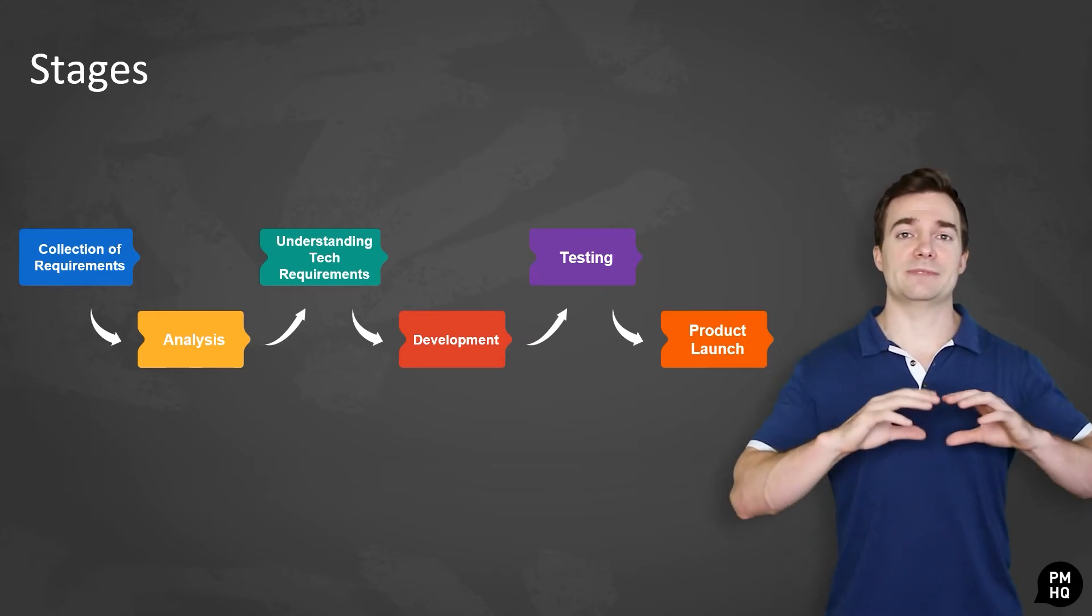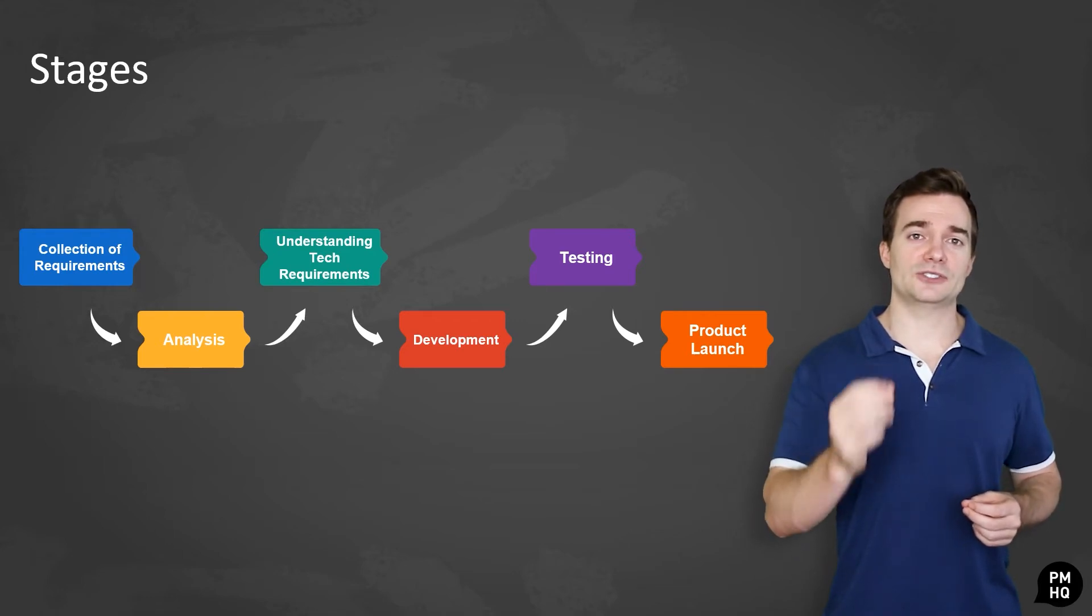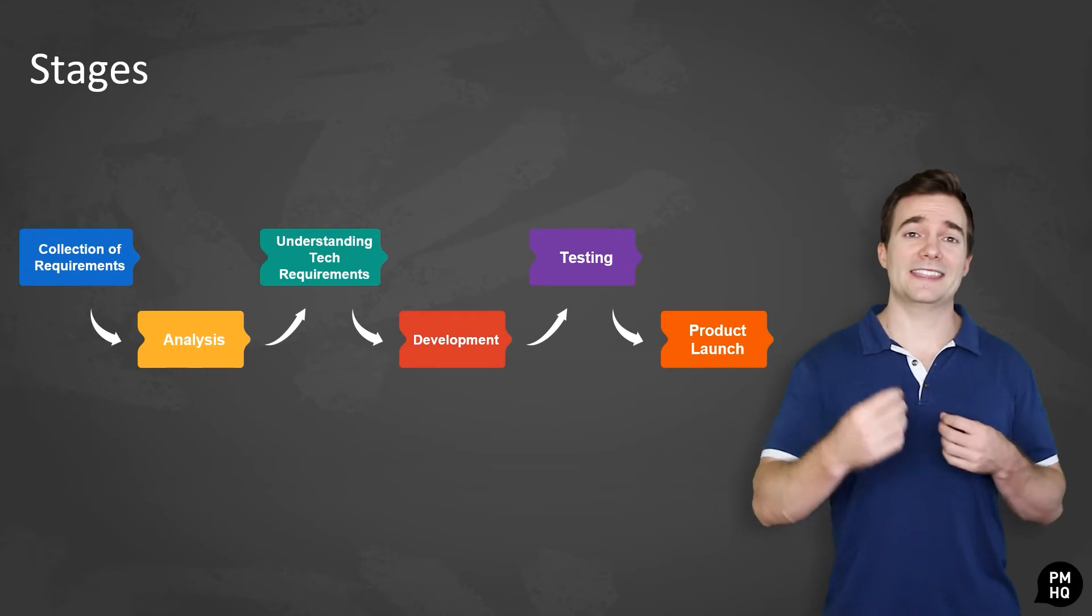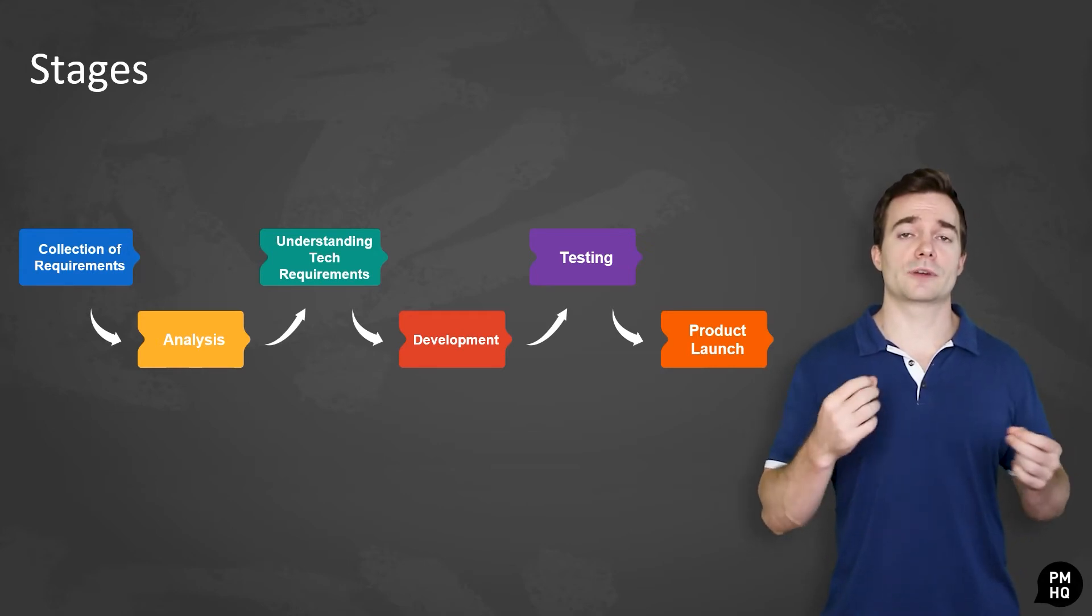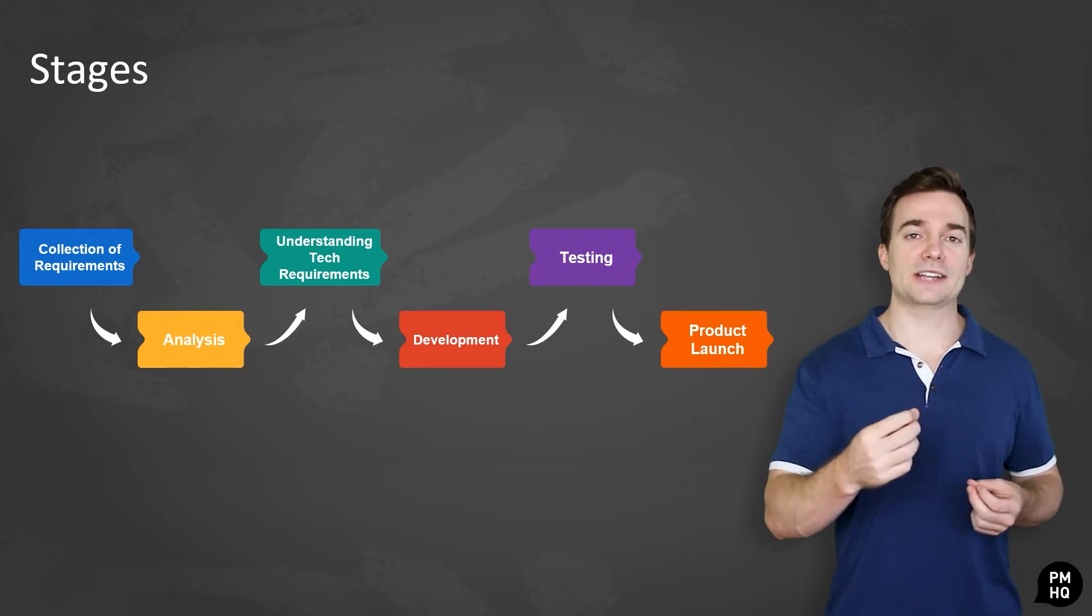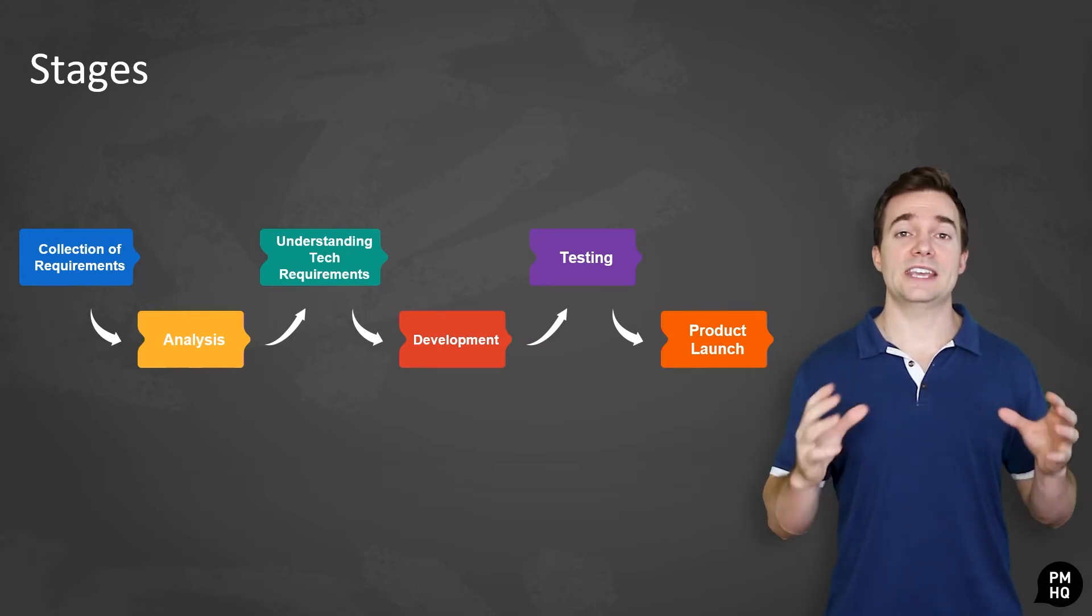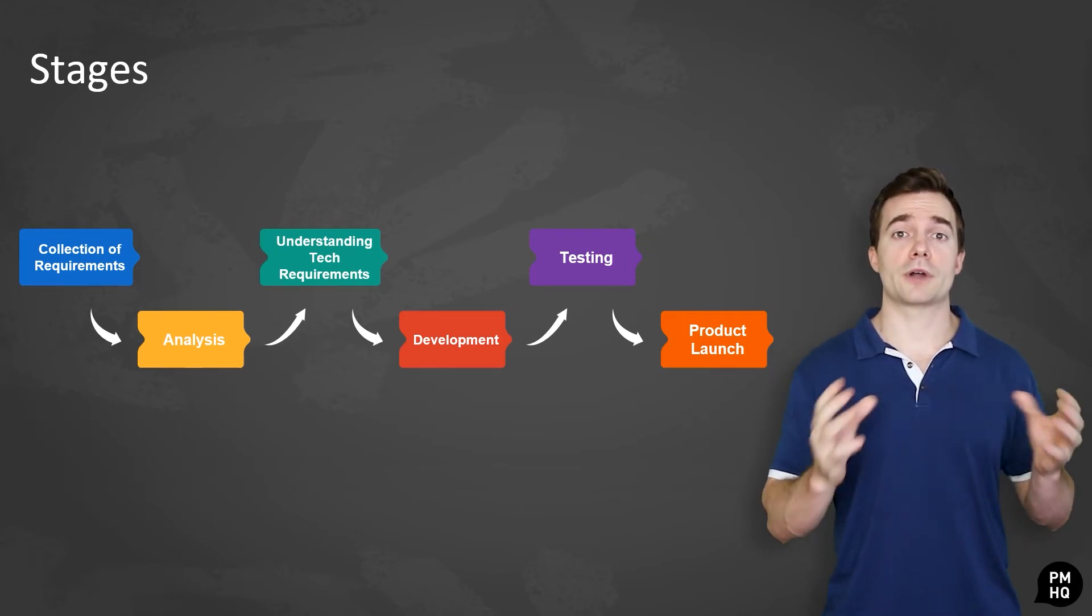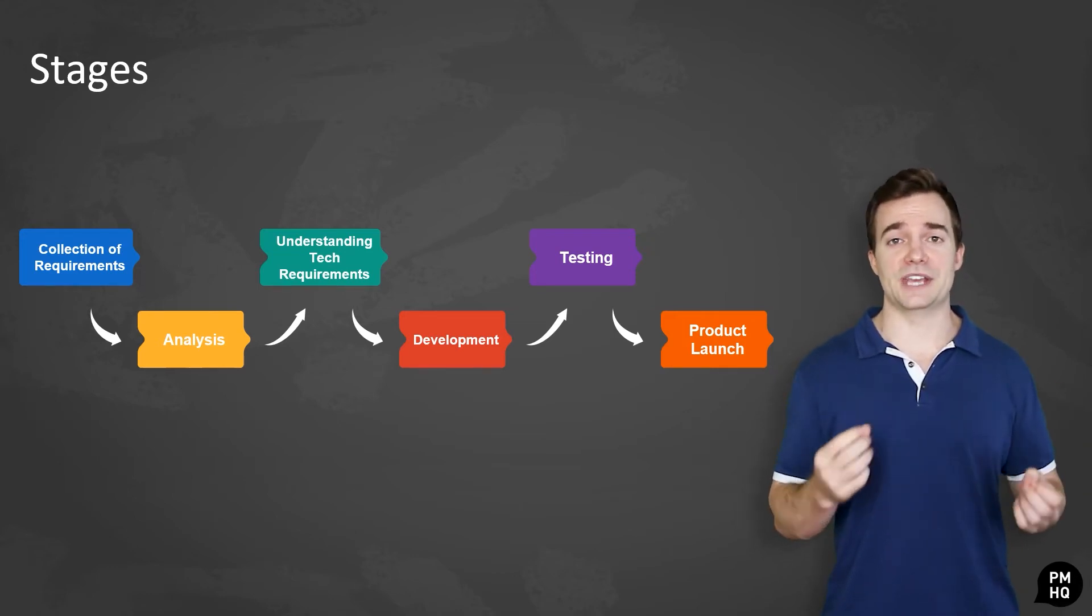Once the product has been tested, you move on to the sixth and final stage in the waterfall approach, which is the product launch. At this stage, the application is ready for deployment to a live environment where users can access it and get back to you with more feedback. It's key that customers review the product to make sure that it meets the requirements laid out at the beginning of the project. After the product release, it's important to maintain subsequent support on the product to keep it functional and up-to-date.